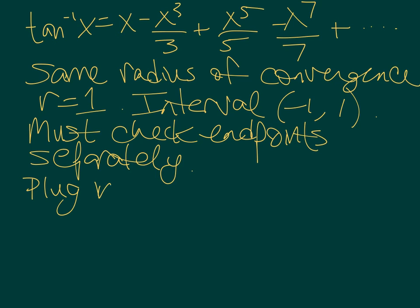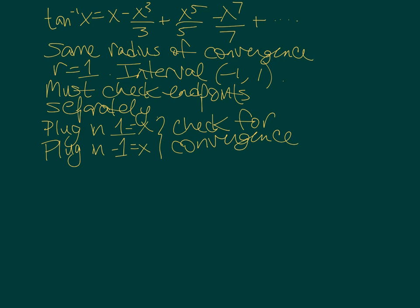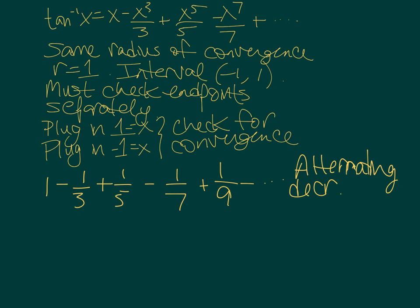What does that mean if we're checking the endpoints separately? It means we have to look at our series, and we have to plug in 1 for x, and we have to plug in -1 for x, and check for convergence for these specific cases. Let's take a look. Let's plug in a 1. We have 1 - 1/3 + 1/5 - 1/7 + 1/9, etc. What kind of series is that? That's an alternating series with decreasing terms and terms going to 0, so it converges.